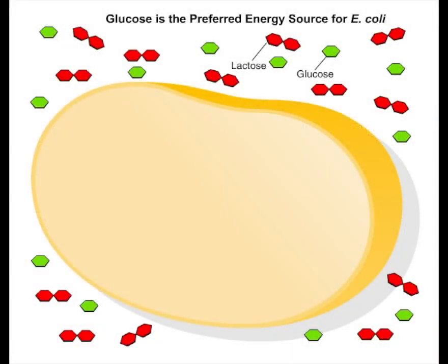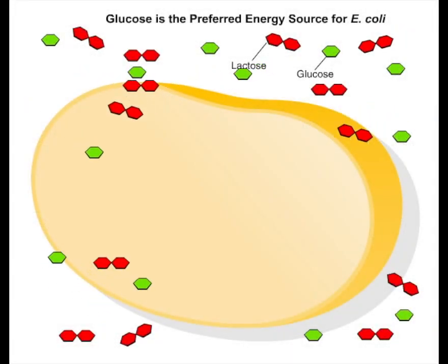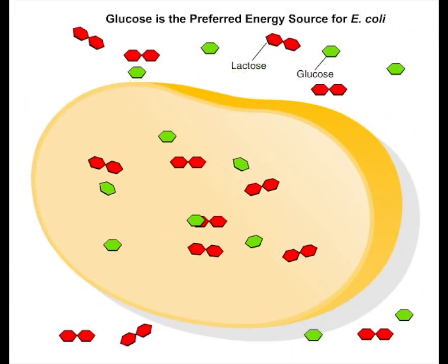Glucose is the preferred and most frequently available energy source for E. coli. Whenever glucose is present, E. coli metabolizes it before using alternative energy sources such as lactose.